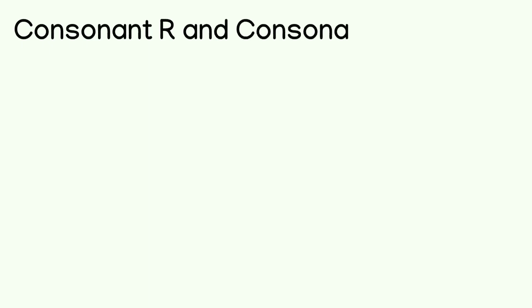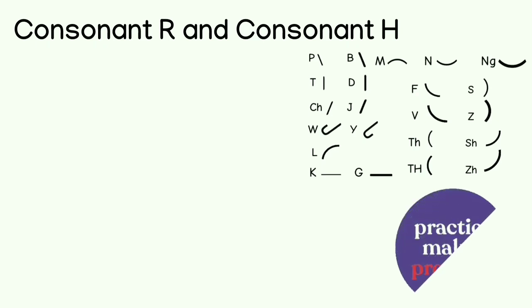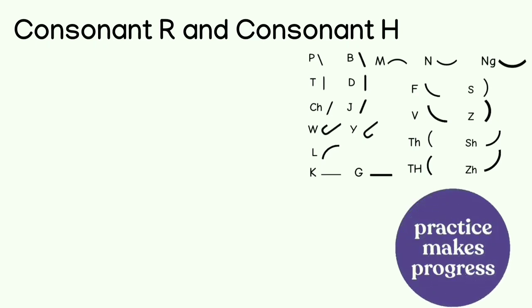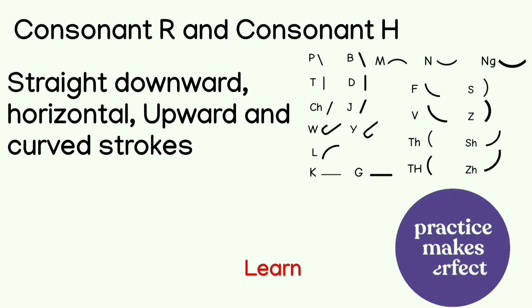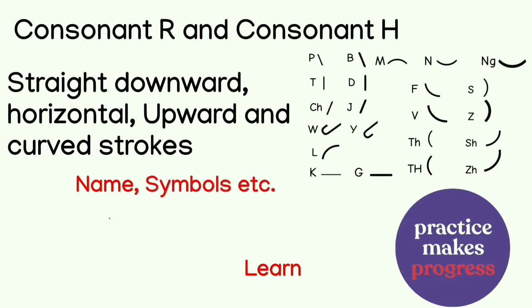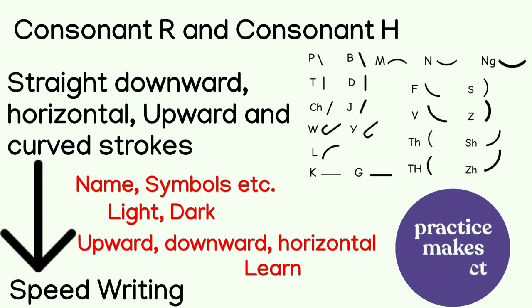So now we have learned to make all consonants except consonant R and consonant H. We need to practice all these consonants well — straight downward strokes, horizontal strokes, upward strokes, and today's curve strokes — until all consonant names, symbols, and whether they are light or dark are at your fingertips. Practice well so that when you do speed writing ahead, there is no problem writing the consonants. That's all for today. See you in the next video. Until then, bye everyone, take care.